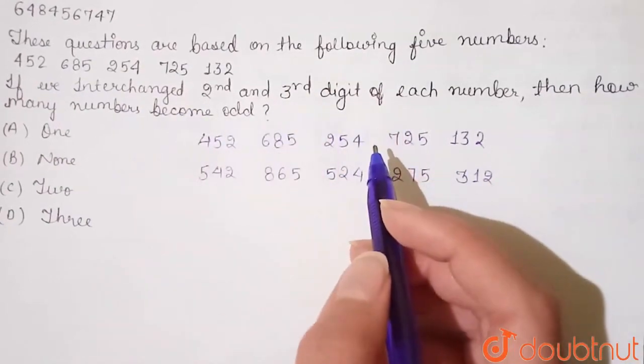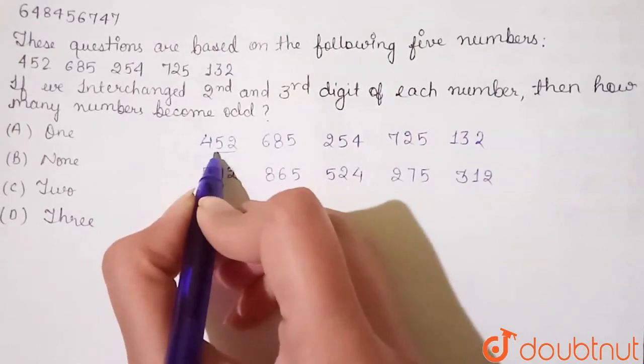Then how many numbers become odd? We will interchange them from the 2nd and 3rd digit.